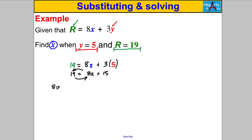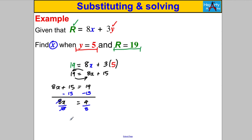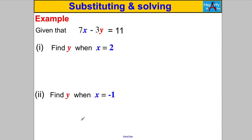I like to write the variable on the left, so I swap to: 8x + 15 = 19. Subtract 15 from both sides: 8x = 4. Divide both sides by 8: x = 4/8. Simplify by dividing top and bottom by the HCF of 4 and 8, which is 4, giving x = 1/2. Check: 8×(1/2)=4, 3×5=15, 4+15=19. Correct.